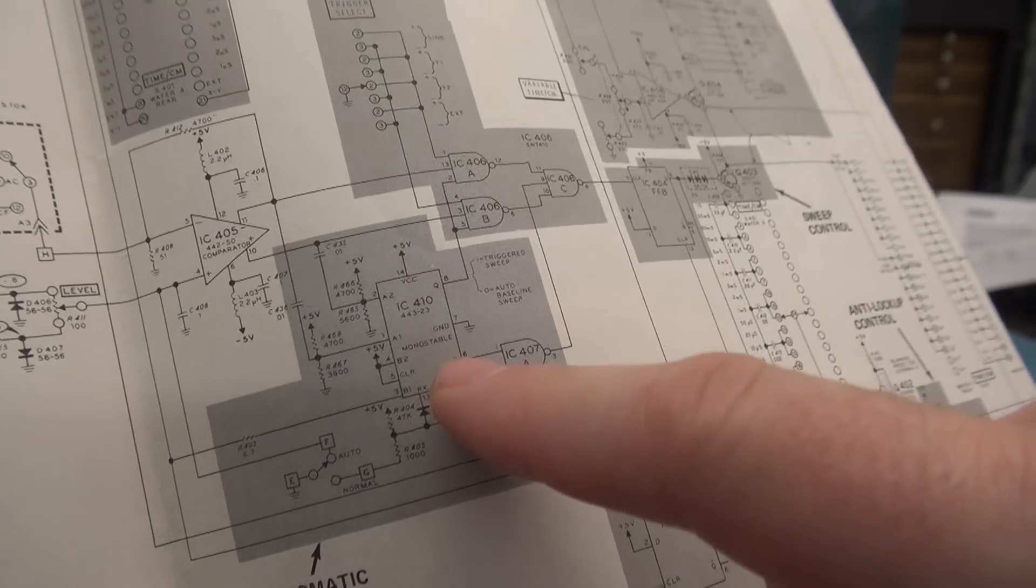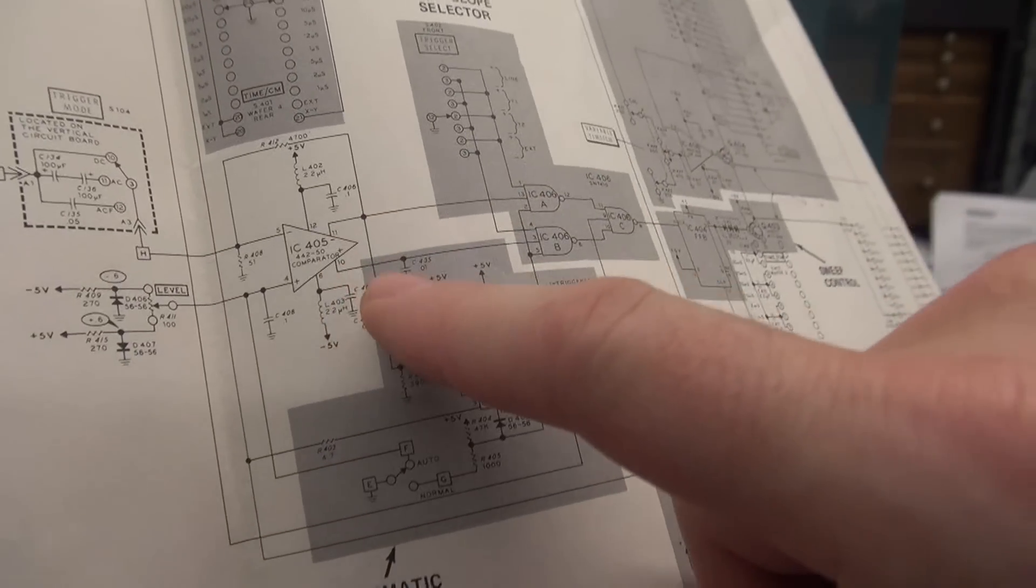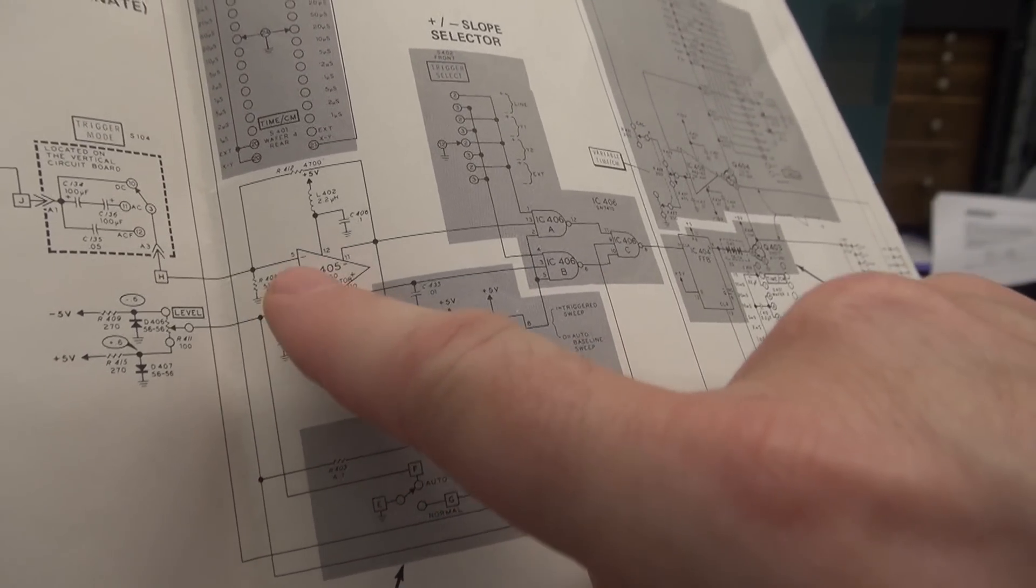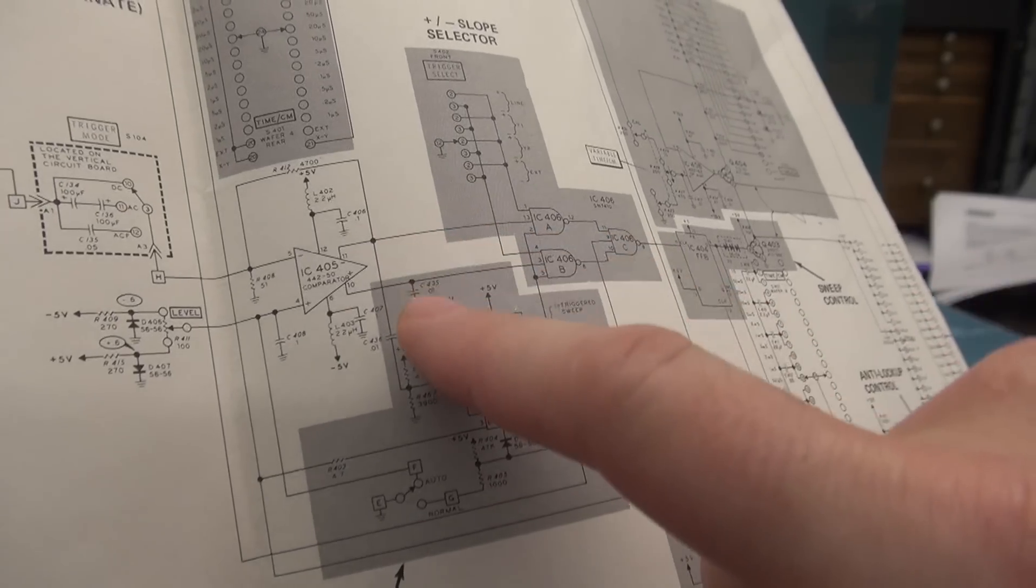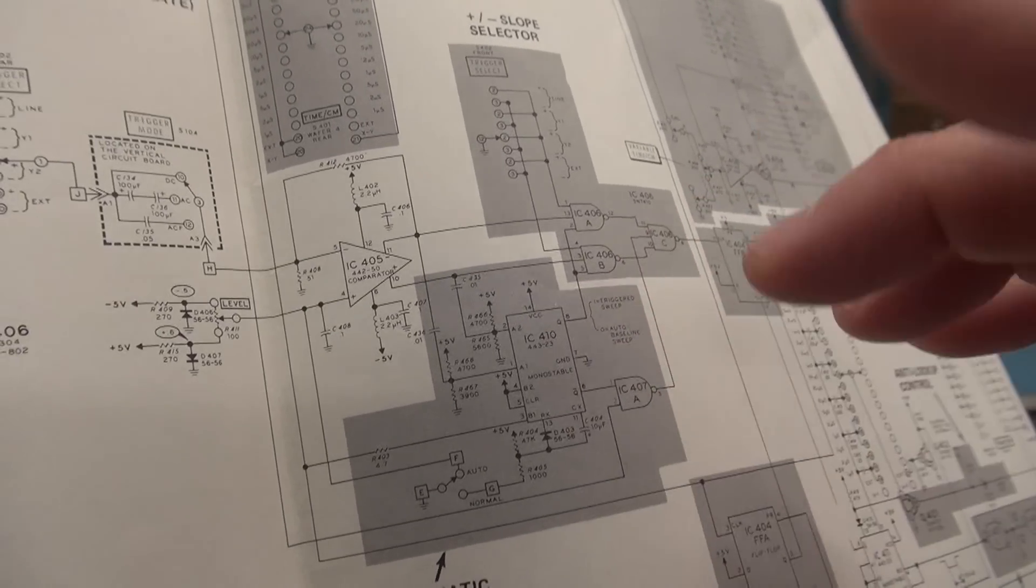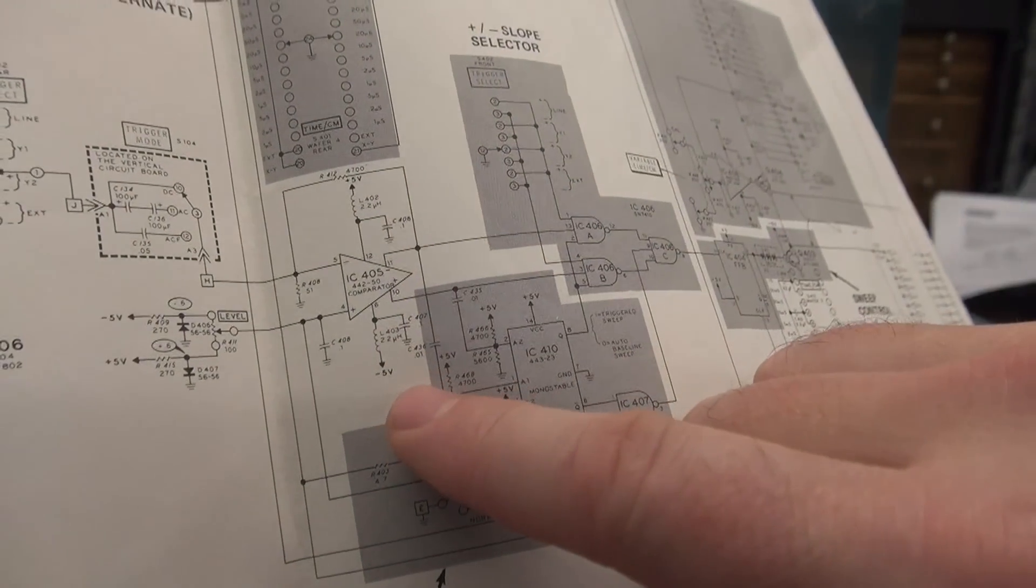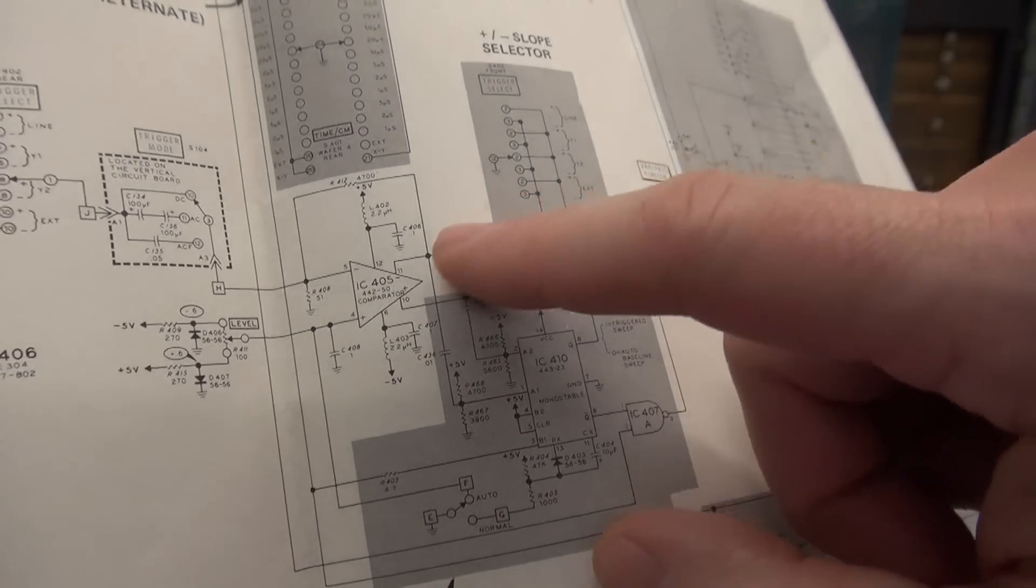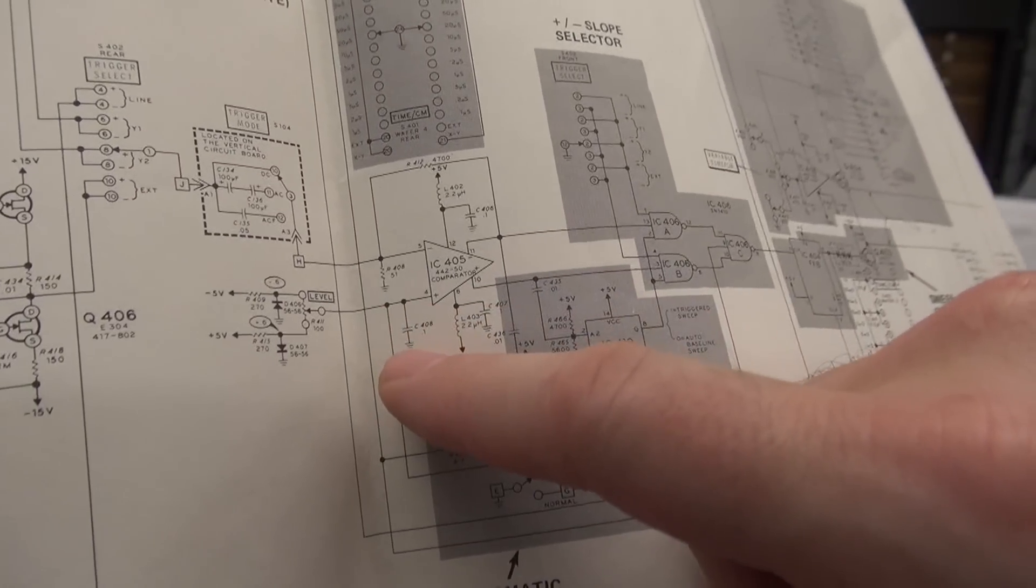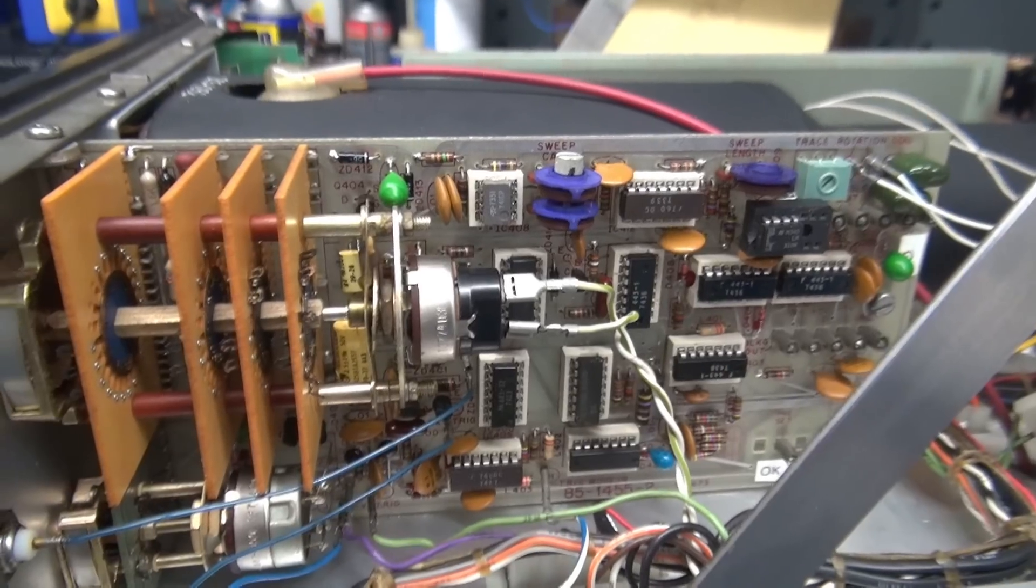But if you look, some of the inputs for IC4010 come off of 405. So we're back at 405. So what I'm going to do is take a look at the input, which is pins 4 and 5, and then we'll look at the outputs, which is 11 and 10, and see if this chip is doing what it's supposed to do. And also, you'll see you have a plus 5 and a negative 5. Remember, we just fixed that power supply. So the first thing, obviously, is make sure you got power to the chip. We'll check the signal. If we got the inputs and we ain't got the outputs, chip's bad.